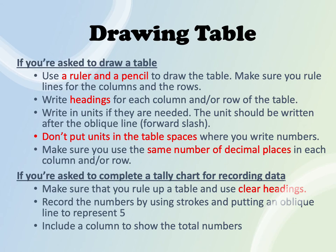Use the same number of decimal places in each column or row. For example, if the table contains 16.25 which has 2 decimal places, all your numbers must be written to 2 decimal places: 16.00, 16.50, and 16.25.